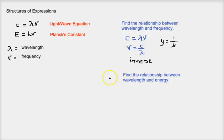Now for the next one, find the relationship between wavelength and energy. The wavelength would be the lambda, and energy would be E. The problem is lambda is not in the Planck's constant equation. So what we have to do is substitute frequency as a form of lambda. So we can rewrite the light wave equation to be c equals lambda v. We can rewrite this by dividing on both sides, c divided by lambda.